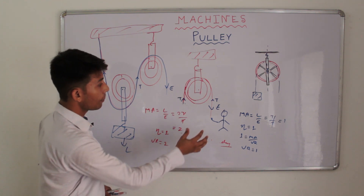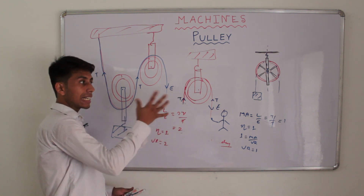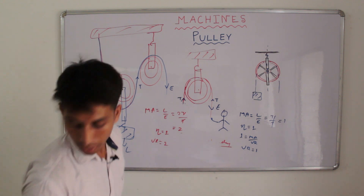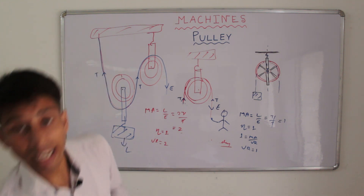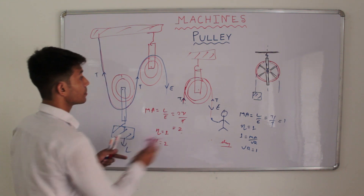Keeping efficiency equal to 1, velocity ratio is also equal to 2. So the combination acts as a force multiplier and we are applying the effort in a convenient direction. This combination of single fixed and single movable pulley is used to apply the effort in a convenient direction.